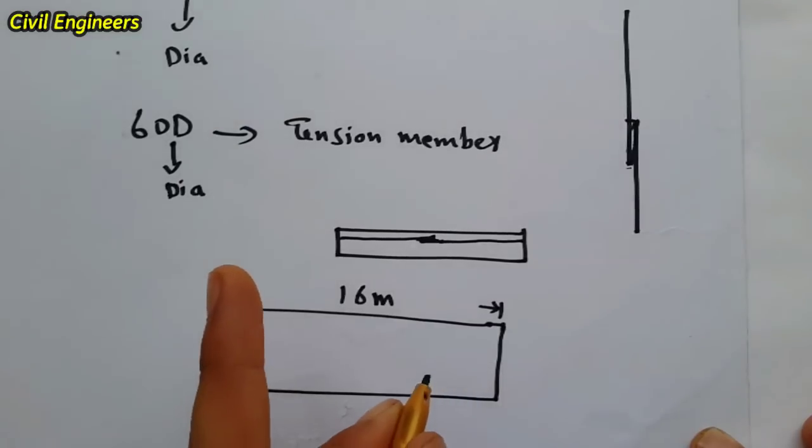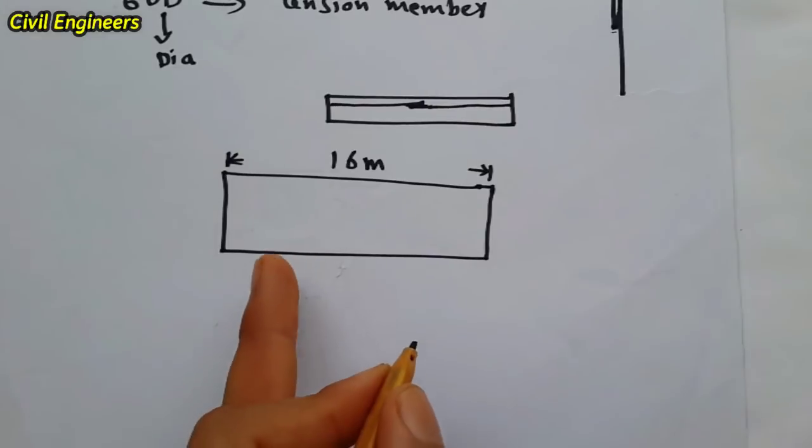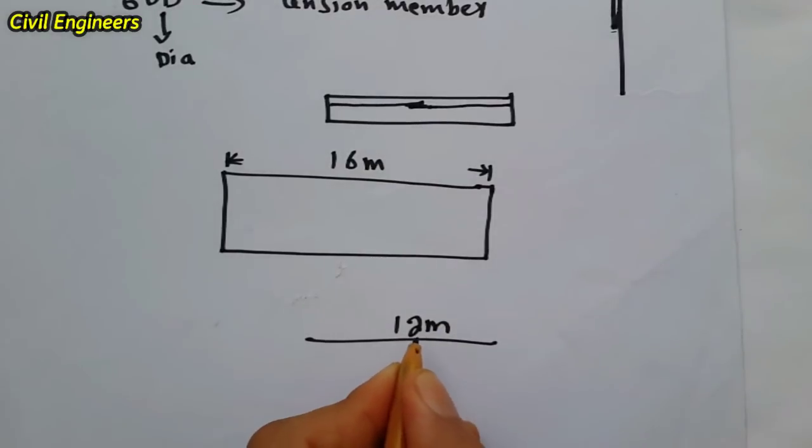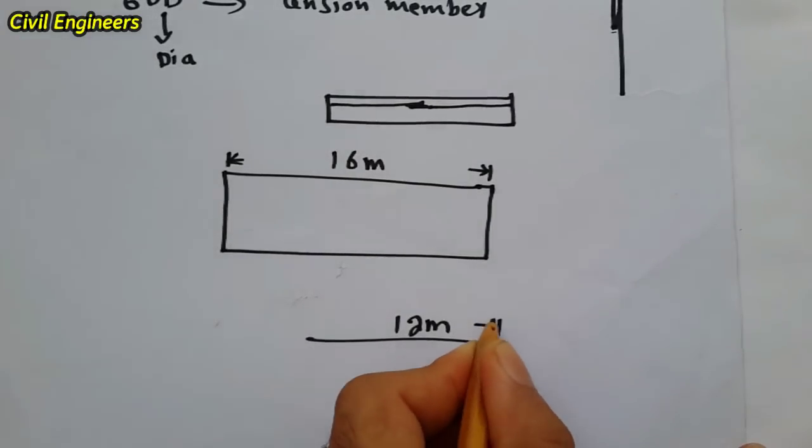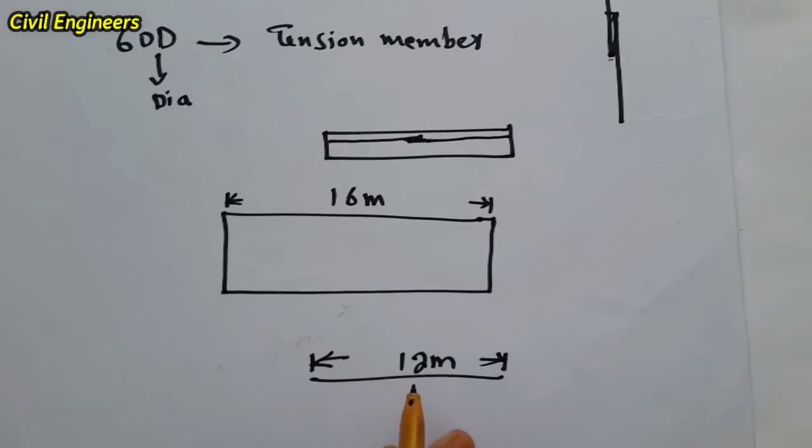But keep in your mind one thing - the steel factories are allowed to manufacture steel just 12 meters. They are not allowed to manufacture steel more than 12 meter per ACI. The maximum length of steel is 12 meter.